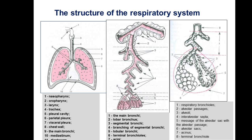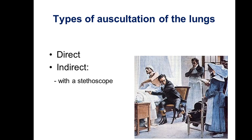You should remember from anatomy class the upper airways and lower airway structure, grades of bronchitis, and also the structure of alveoli. There are two types of auscultation of lungs: direct and indirect. Direct auscultation was used for a long time before inventing the stethoscope, and now daily we use indirect auscultation.